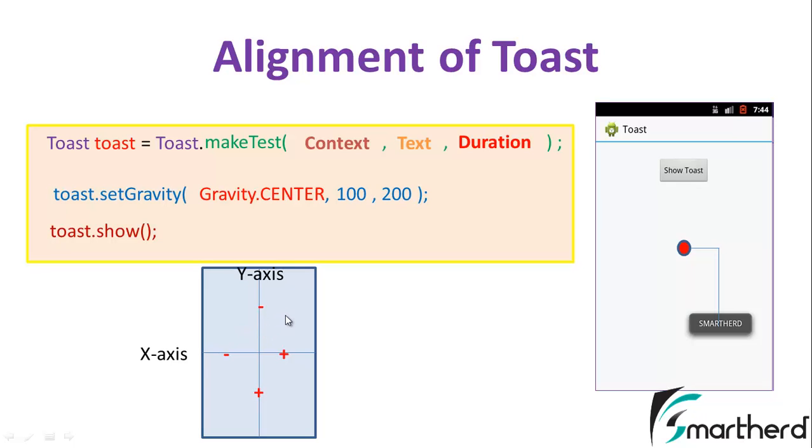Suppose y is negative and x is positive, then Toast message will appear in this area. In this way you can print all the Toast message in your desired area. Now let's not waste time and jump onto the Eclipse to show you the codes.